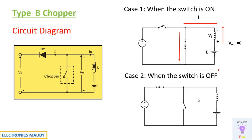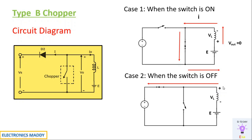Now let us check what happens when the switch is off. The switch is basically open-circuited and E is the EMF. The property of an inductor is such that it does not allow a sudden change in current according to Lenz's law. So it changes its polarity from plus-minus to minus-plus, allowing the current to continue flowing in the same direction, and it now acts as an energy source.